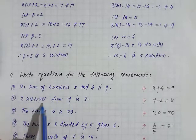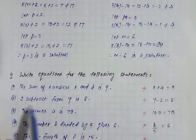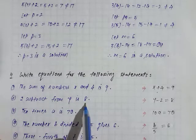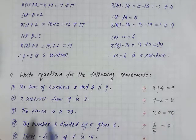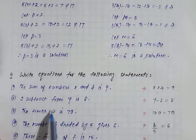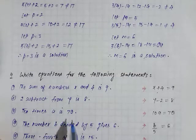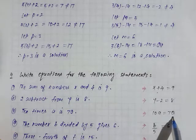Second number, 2 subtracted from y is 8. If 2 is subtracted from y, the value is 8. Therefore, our equation is y minus 2 is equal to 8. Next, 10 times a is 70. a multiplied 10 times equals 70. So 10 times a equals 70.